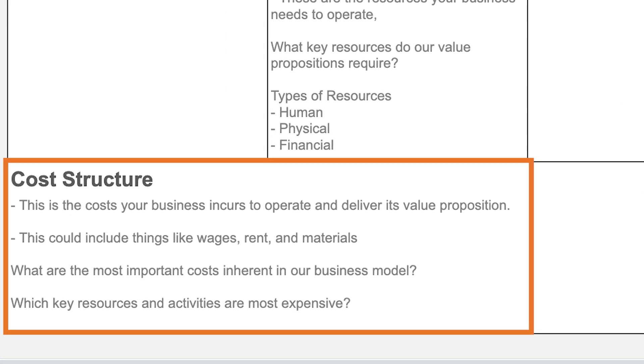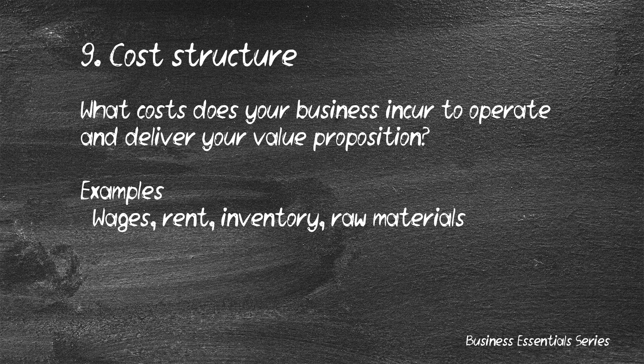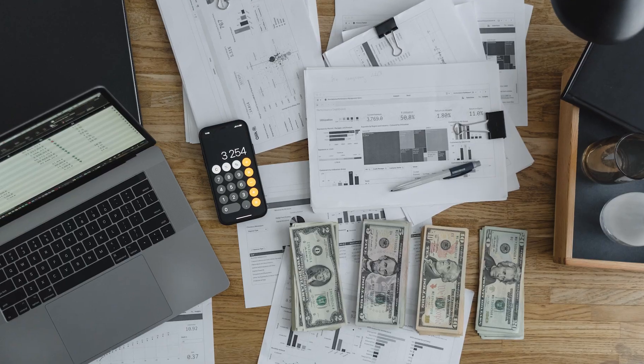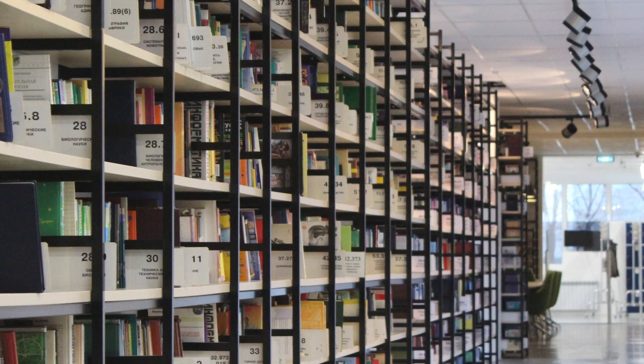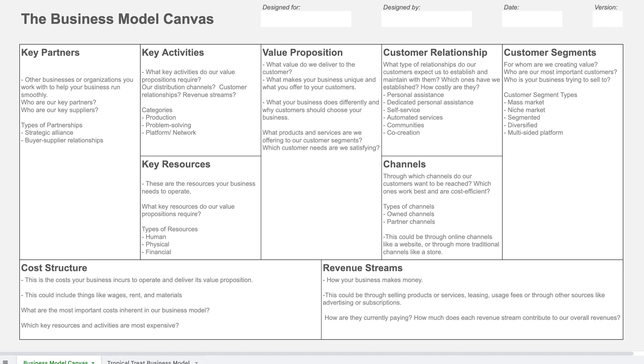The last key element is your cost structure, which simply refers to the costs associated with your business in delivering its value proposition. This could include things like wages, rent, and materials. You need to figure out what the most important costs are, what key resources cost, and what you're going to have to spend money on.